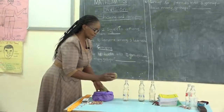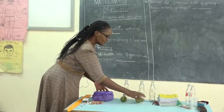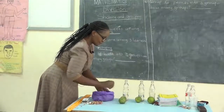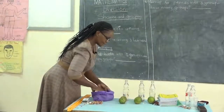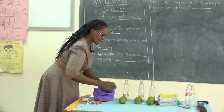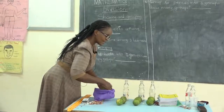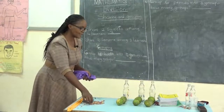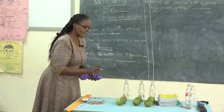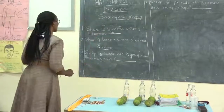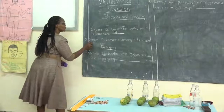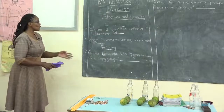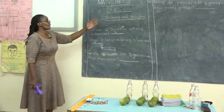Let us share: one, two, three, four, five, six, seven, eight, nine. We have shared all our lemons. Now we count how many lemons each learner will get: one, two, three. So after sharing nine lemons among three learners, each will get three lemons.